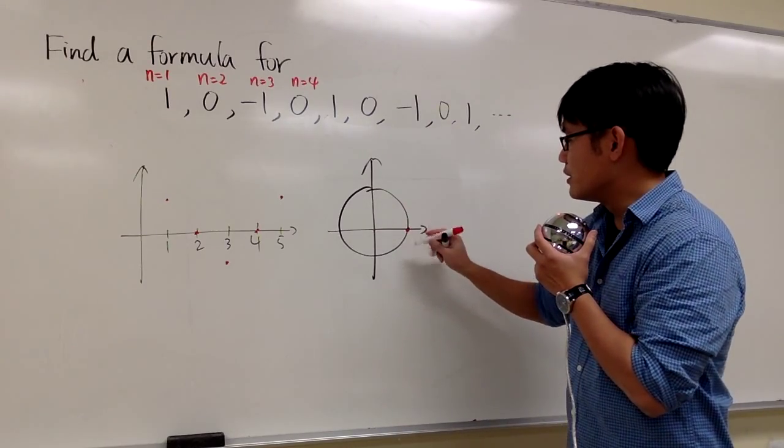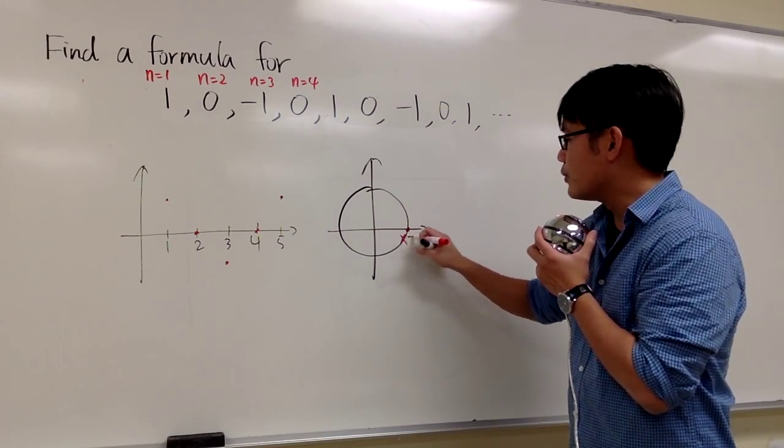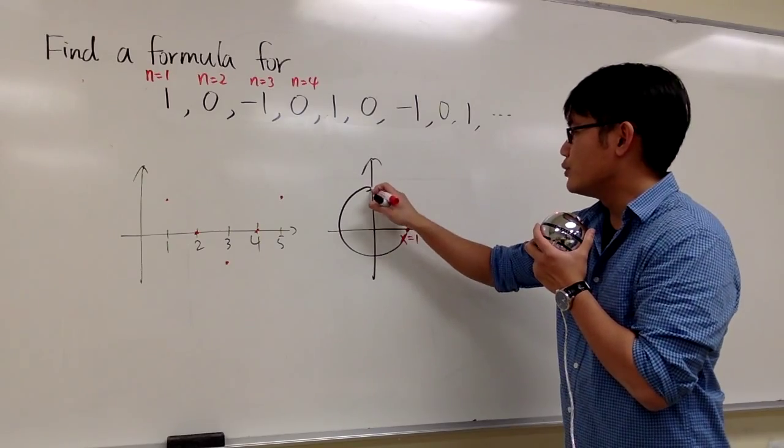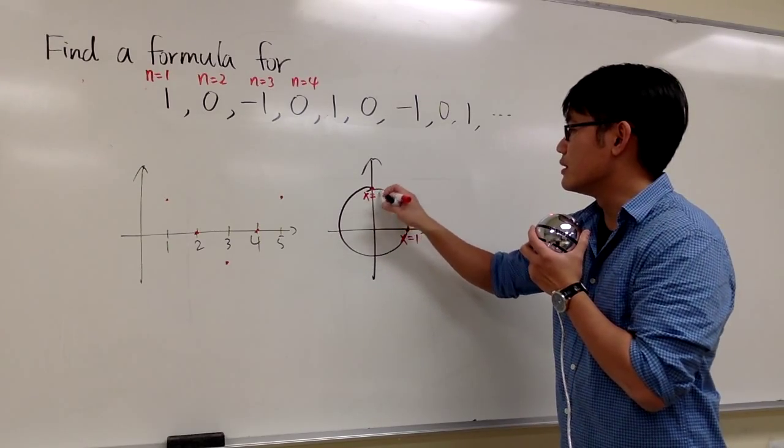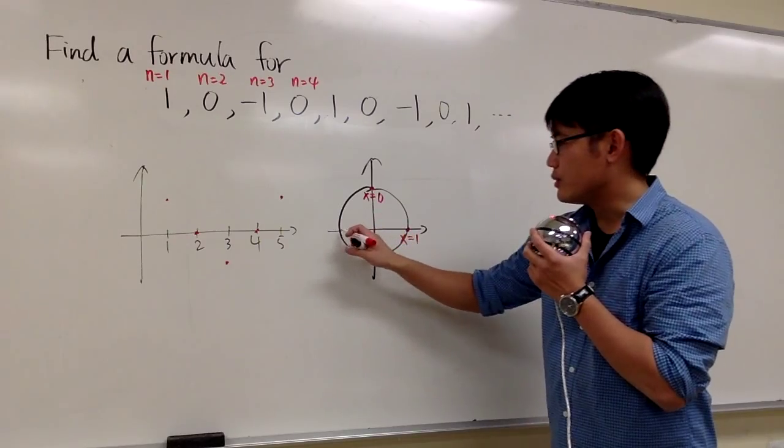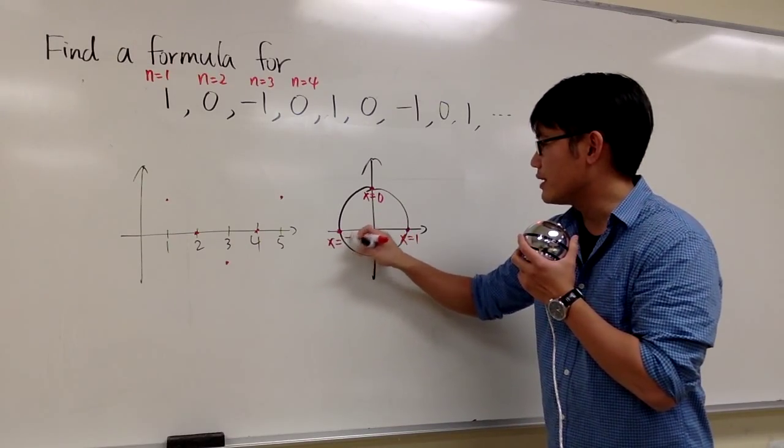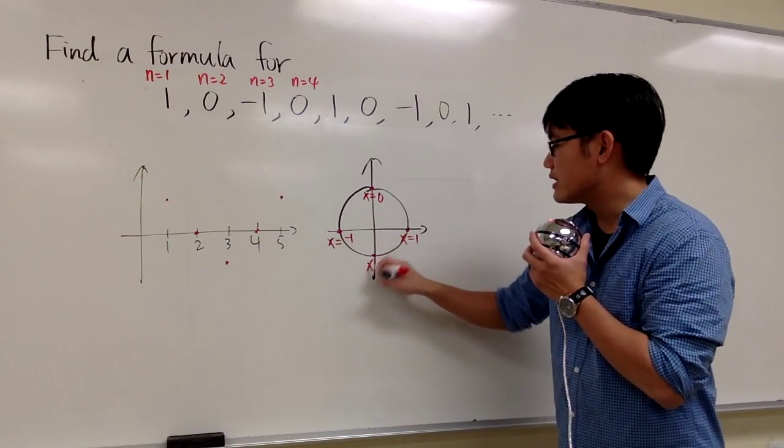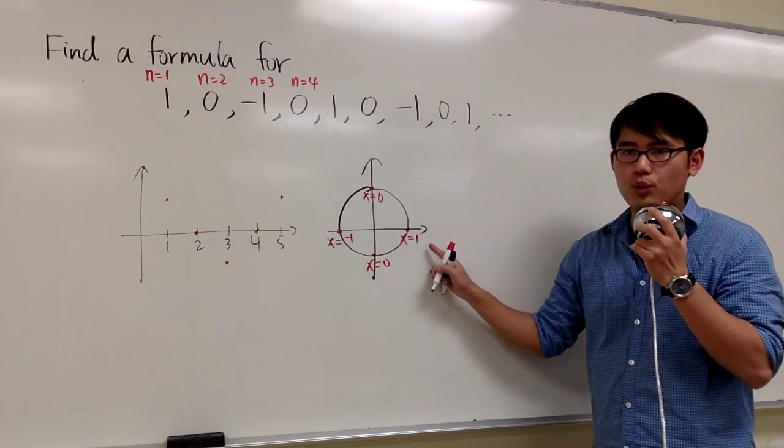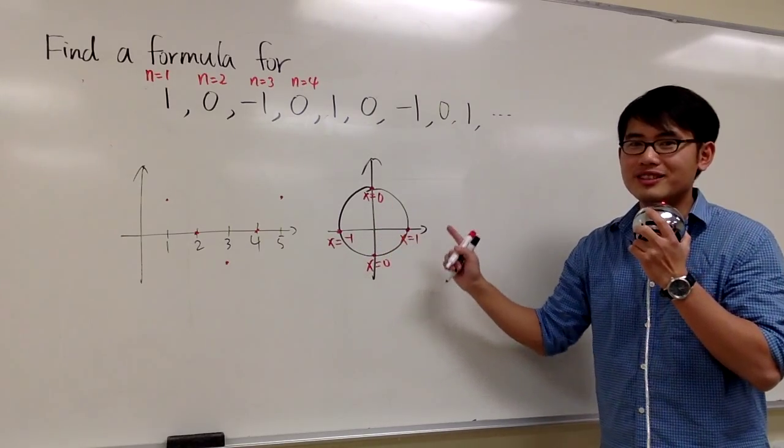So, if you begin with the unit circle right here, the x value here is 1, and then once you go here, the x value is 0, and then once you go here, the x value is equal to negative 1, and then here, the x value will be 0, and then here, you are back to 1. Now, we are running around the unit circle.